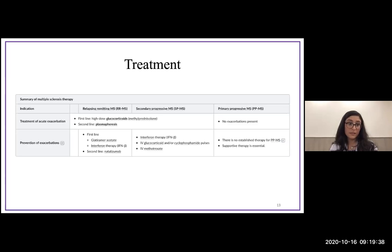To prevent exacerbations, we use different drugs. Glatiramer resembles the myelin protein—it decoys T cells from attacking myelin. There's interferon therapy that diminishes the inflammatory response causing demyelination. These are first-line drugs. Second-line natalizumab is a monoclonal antibody against alpha-4 integrin, used in patients who have failed first-line treatment.